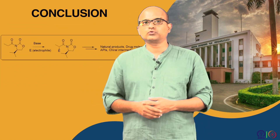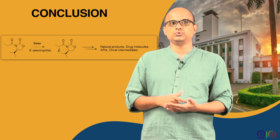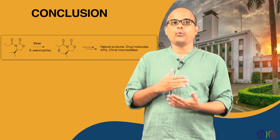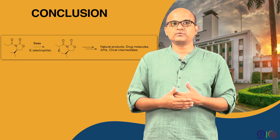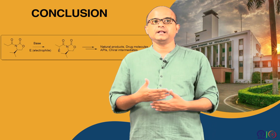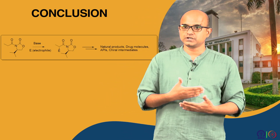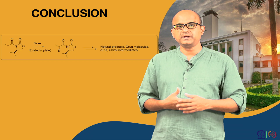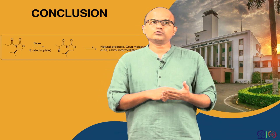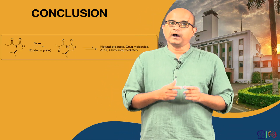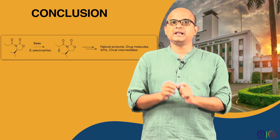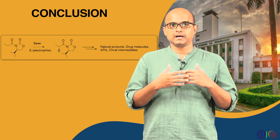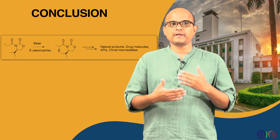Throughout the coursework, we will engage you in different modes of asymmetric enolate alkylation, and show how the resulting compounds can be synthetically manipulated for several value-added products like natural products, drug molecules, active pharmaceutical intermediates or ingredients, and chiral intermediates. We will also provide take-home assignments during the coursework, and each lecture contains assignments so that in the weekly assignments you will be exposed to a variety of problems.